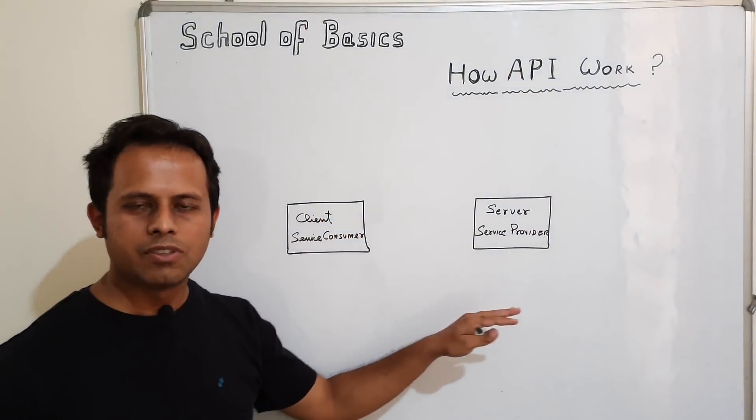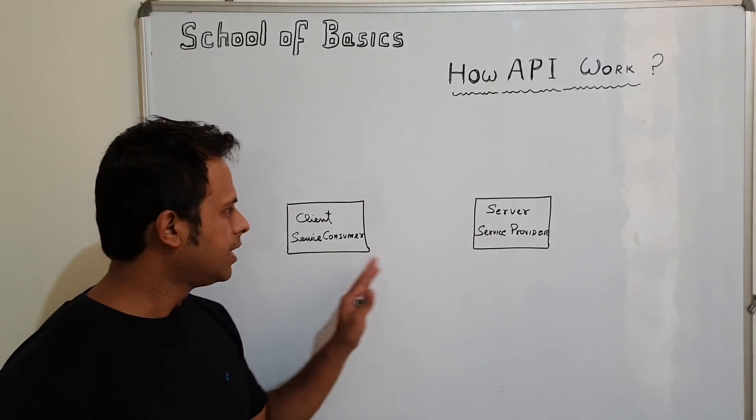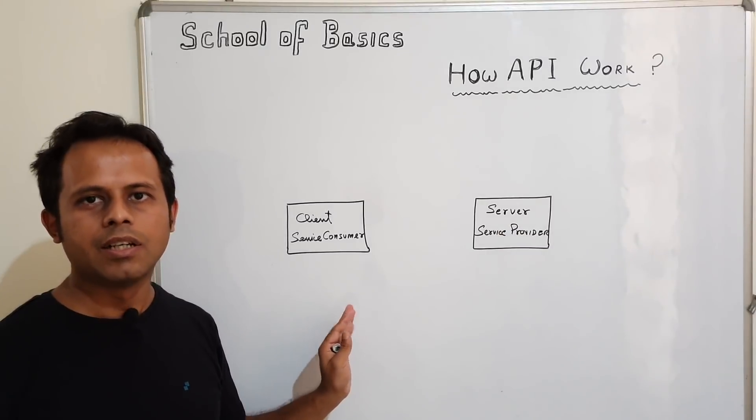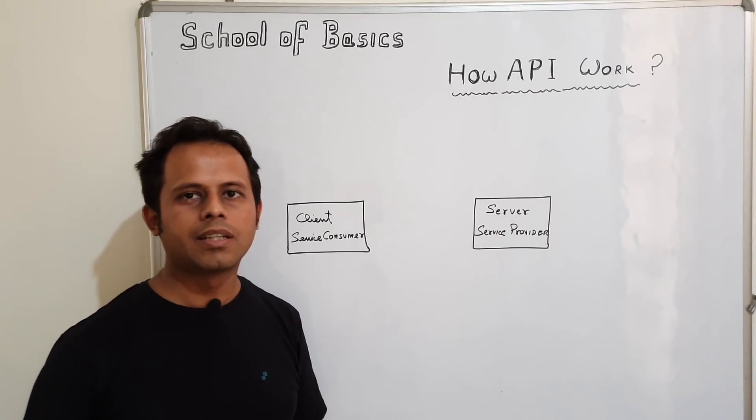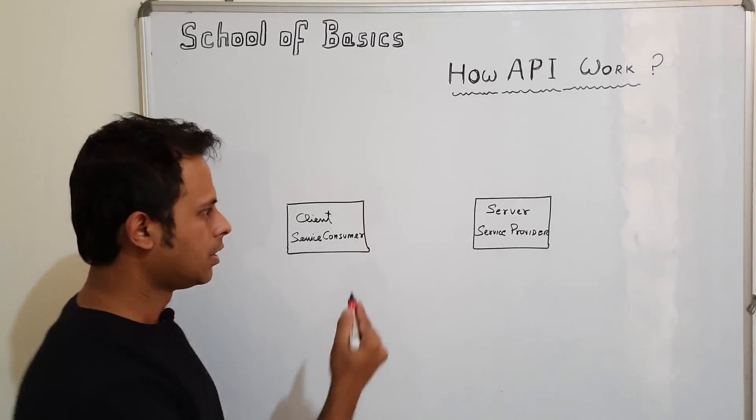So here we need to have a service provider who creates a service or implements that service and then we need a consumer who will consume that service. So that is a server and here we have a client. The client sends a request and the server processes this request and then sends back the response.